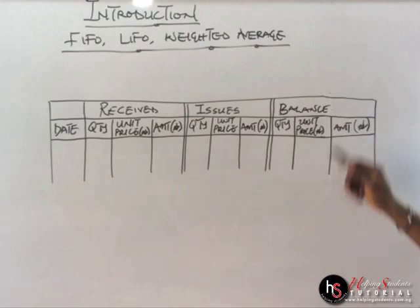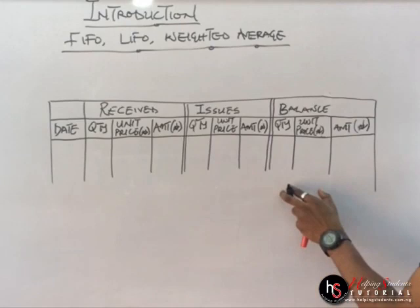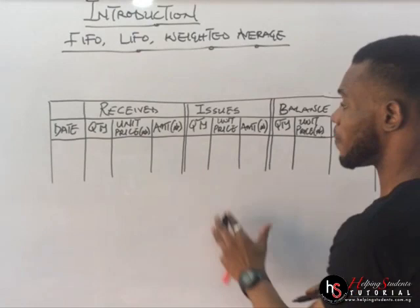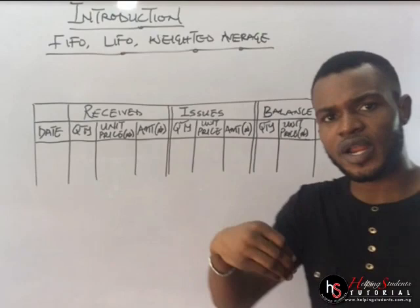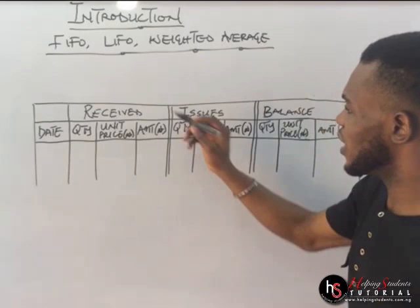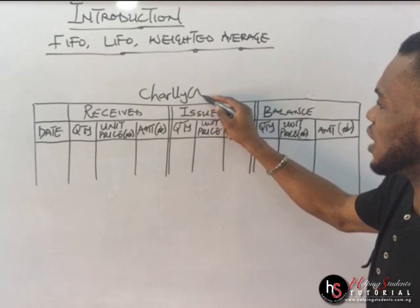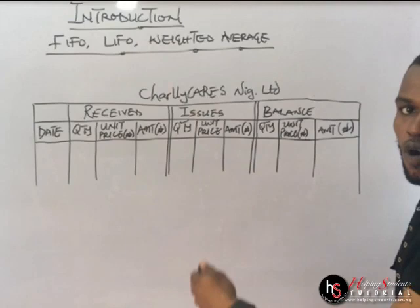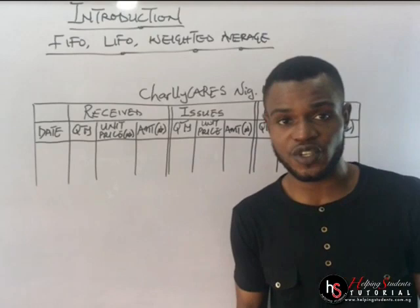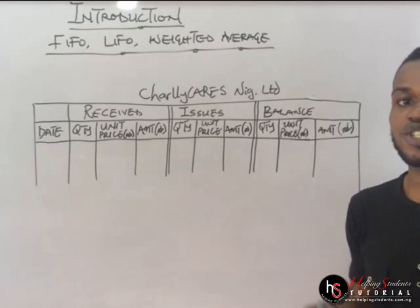Any transaction that is being recorded in either the received section or the issues section must be balanced. Under the FIFO, LIFO, and weighted average, every transaction must be balanced — it must come to the balance section. This is the first thing you need to know; it is very, very important. Also, your account must be titled. Based on how the question comes, your account must be titled — for example, Charlie Kers Nigeria Limited. Then you specify what you're solving for below: FIFO, LIFO, weighted average, or simple average.